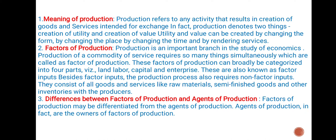Factors of production: Production is an important branch in the study of economics. Production of a commodity or service requires so many things simultaneously, which are called factors of production. These factors of production can broadly be categorized into four parts: land, labor, capital, and enterprise. These are also known as factor inputs. Beside factor inputs, the production process also requires non-factor inputs, which consist of all goods and services like raw materials, semi-finished goods, and other inventories with the producers.